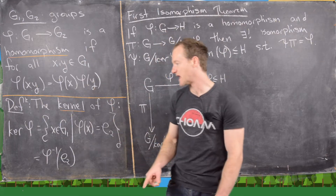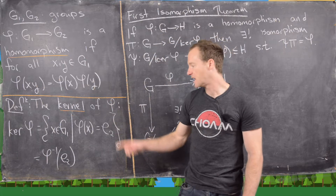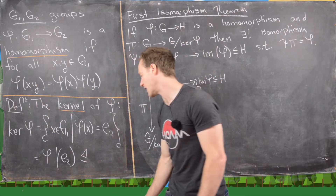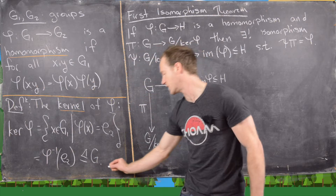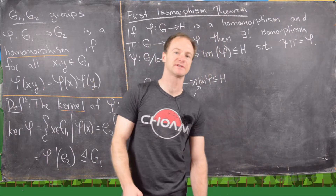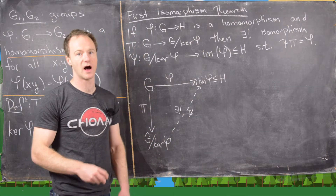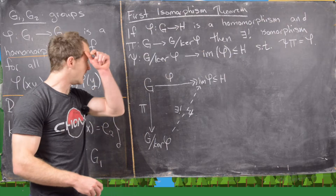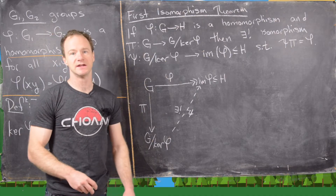The kernel is just the inverse image of this homomorphism phi. In a previous video we proved that the kernel is in fact a normal subgroup of G1. Since it's a normal subgroup, you might ask: what is the quotient group of G1 with the kernel? And that's exactly what the first isomorphism theorem deals with.